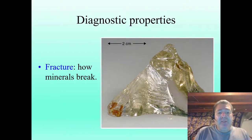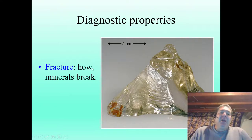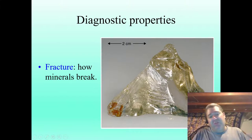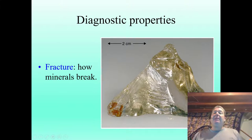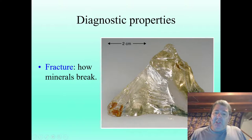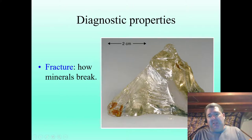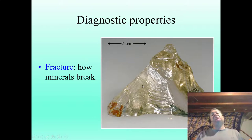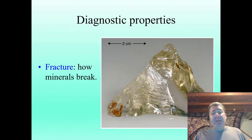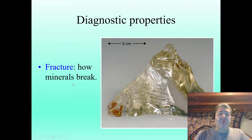If a mineral doesn't have cleavage, it has fracture. And in directions where it doesn't have cleavage, it also has fracture. But some minerals only have fracture. Minerals such as quartz only have fracture, because the silicon and oxygen bonds are very strong — quartz is entirely silicon and oxygen bonds, so there is no weak direction, no weak plane. Instead of breaking down weak planes, it's going to feather throughout the surface. This is what we know as conchoidal fracture.